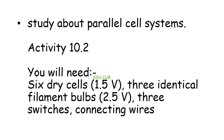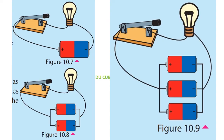In the second activity, you have to study about parallel cell systems. You will need six dry cells, three identical filament bulbs, three switches, and connecting wires. Here you can see three diagrams. Look at the first one.